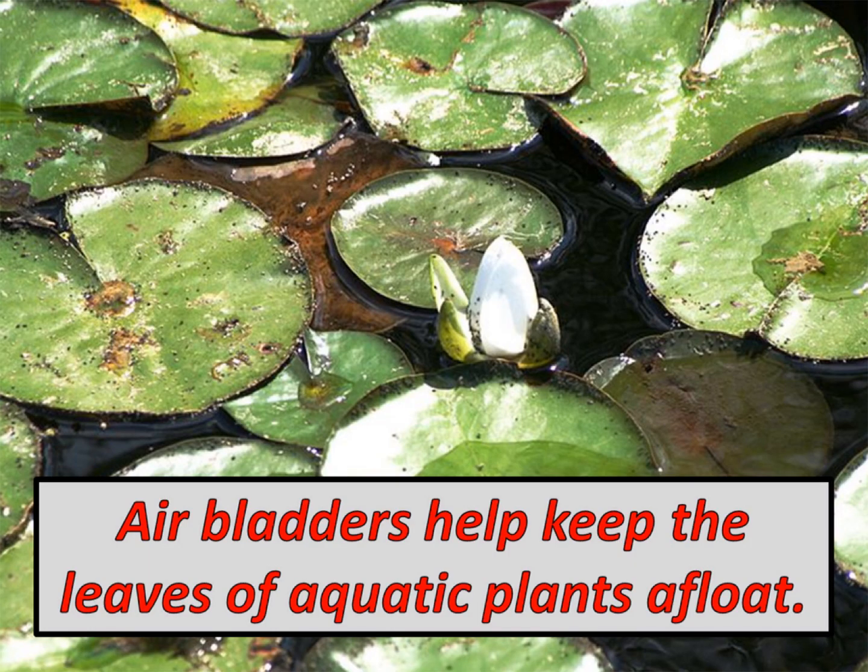The leaves of many plants contain air sacs called air bladders. Air bladders help keep the leaves of aquatic plants afloat. This adaptation allows the leaves of plants to absorb more sunlight by floating on or near the surface of the water.